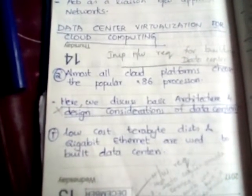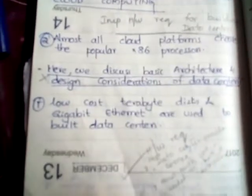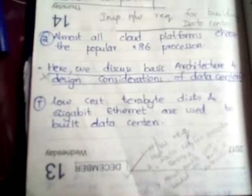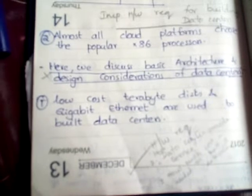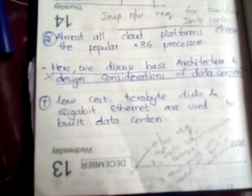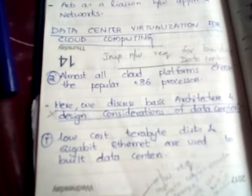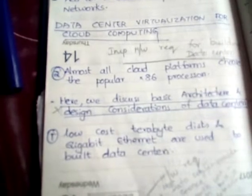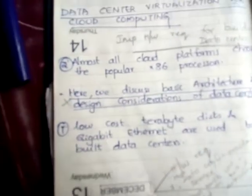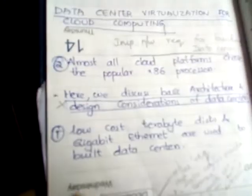Low-cost terabyte disks and gigabit ethernet are used to build data centers. Almost all cloud platforms choose a popular x86 processor, that can be 8086 or other processors.